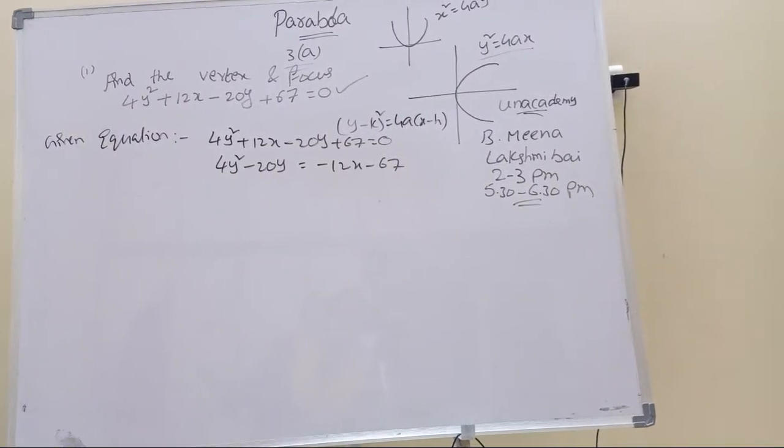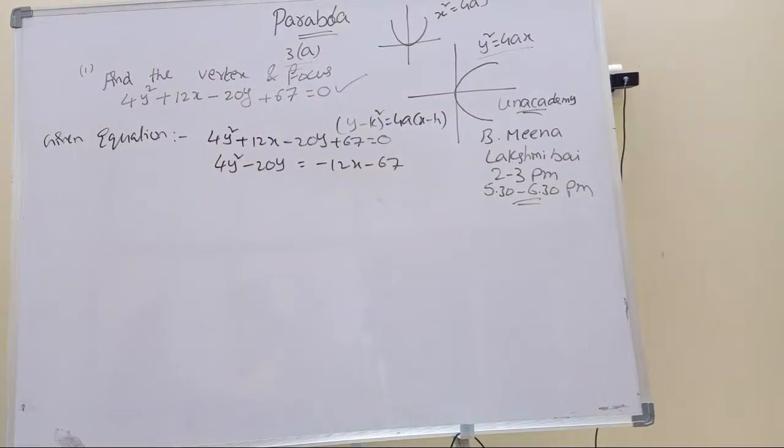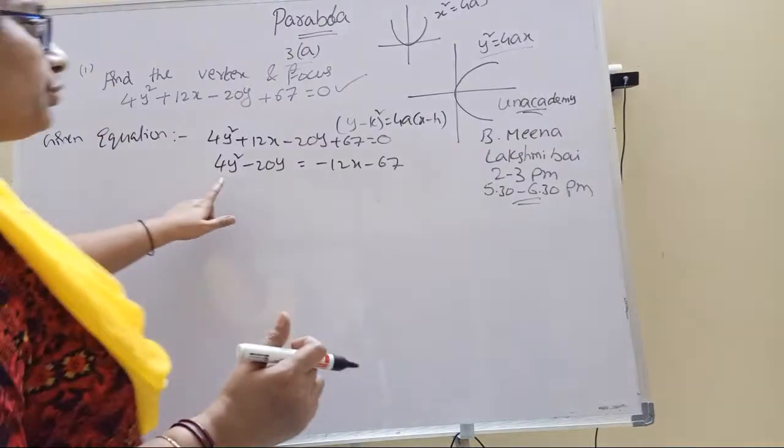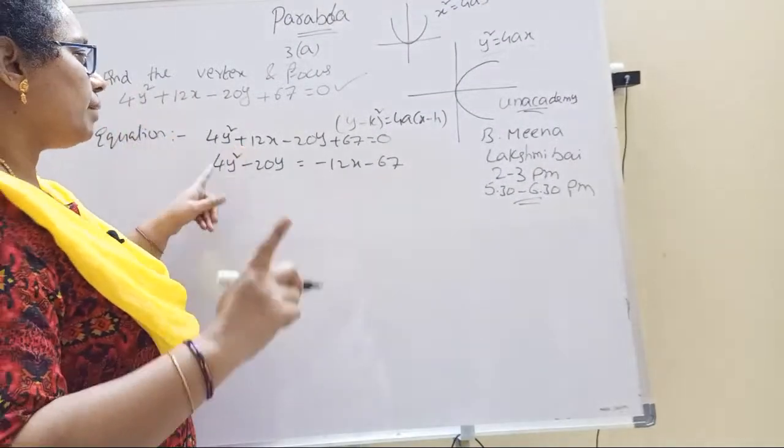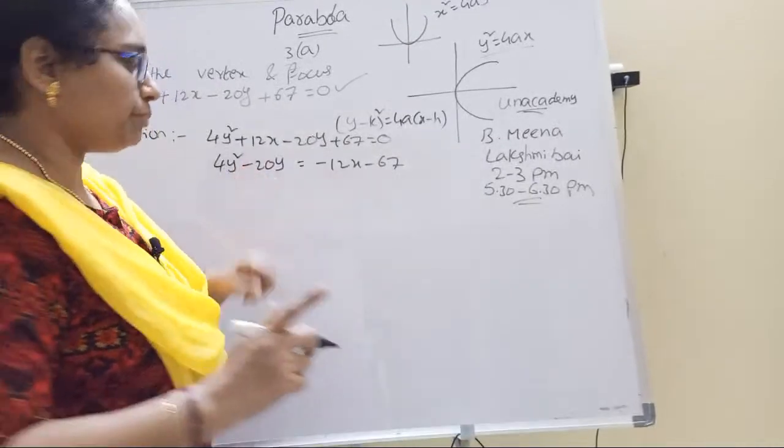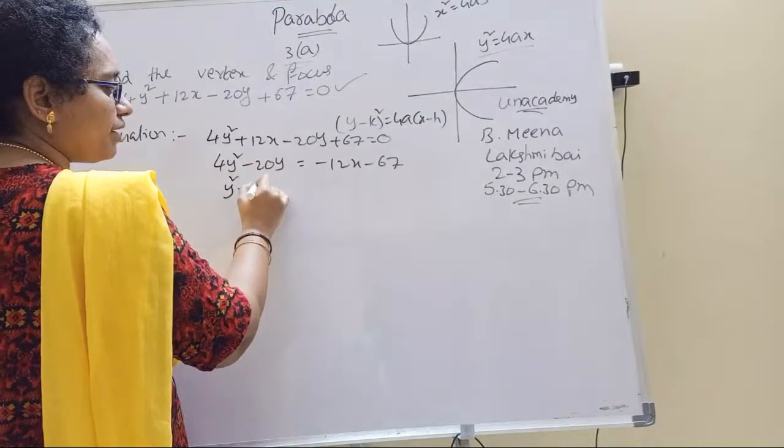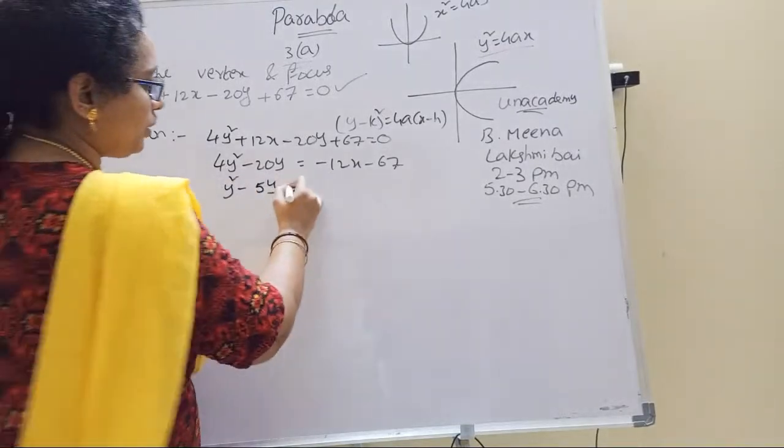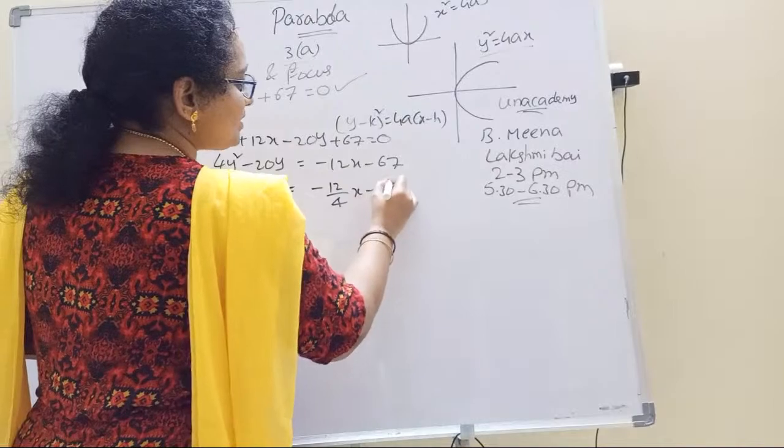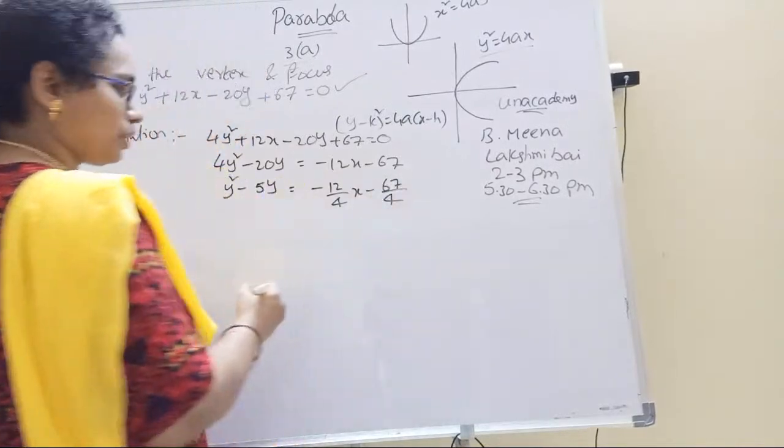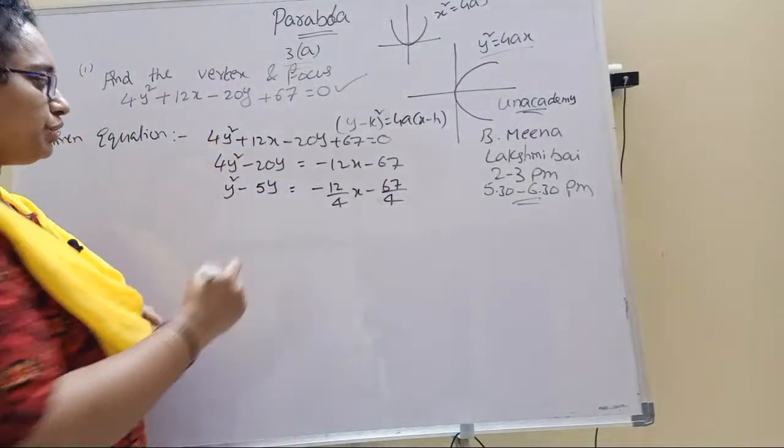Given equation: 4y square plus 12x minus 20y plus 67 equal to 0. We have to convert it like y minus k whole square equal to 4a into x minus h. Now, given equation, we'll rearrange. Y terms one side left, remaining right hand side. So 4y square minus 20y equals minus 12x minus 67.